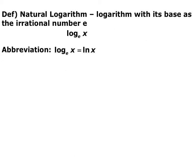We discussed the natural exponential e in a previous lesson. If e is the base of our logarithm — log base e — our shorthand for that is the natural log, ln(x). Whenever you see ln(x), that's the same thing as log base e of x, where e is the natural constant.